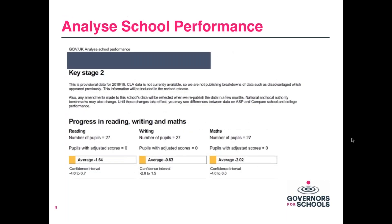We're now going to move away from the IDSR and look at the Analysed School Performance report — the ASP report. As with the IDSR, the large box on this slide covers up the school's identity, as schools have very kindly lent us their data for the purpose of this seminar but it would be inappropriate to identify them as this is confidential data. This is provisional data for 2018-19 in ASP. CLA stands for Children Looked After — some of you may be more familiar with LAC, Looked After Children — and because that data and the breakdowns for disadvantaged children are not yet available, updates will come through as and when the data is available.